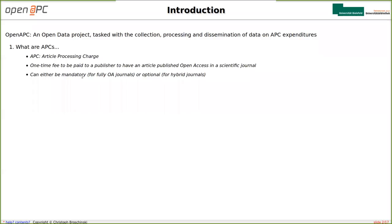Paying an APC can either be mandatory in case it's a fully open access journal — in that case, APCs have to be paid for all articles — or they can be optional in case of hybrid journals. Hybrid journals consist of a mixed set of fully open access and closed access articles. When it's a hybrid journal, you decide whether to pay an APC and have your article published OA, or choose not to pay an APC, in which case your article will be published closed access. As a general rule of thumb, APCs usually range from 1,000 to 3,000 euros, and the average value reported to OpenAPC is slightly below 2,000 euros.